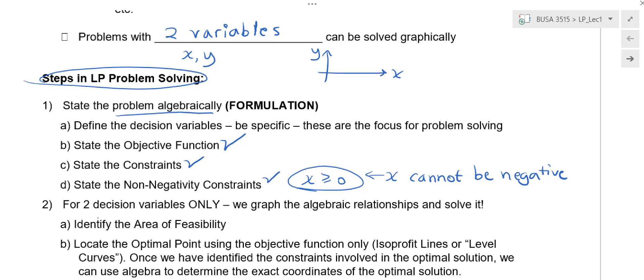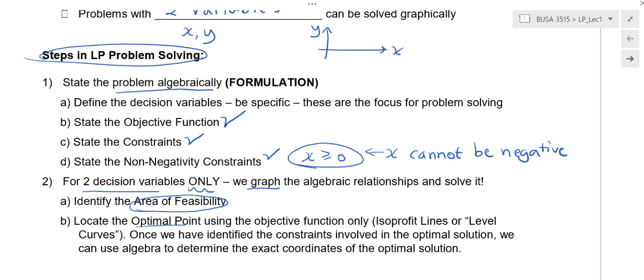And then for two decision variables only, we can graph everything and see where the optimal solution is based off of the graph. So we look at what's called the area of feasibility. What we do is we actually take all of our constraints and we highlight the area that they allow us to be within. And then we look for our optimal point within that area.